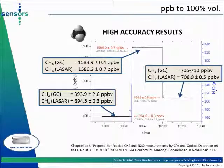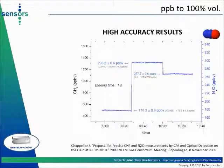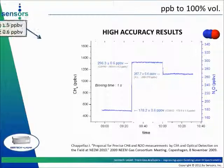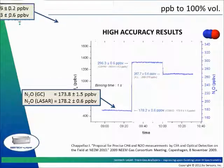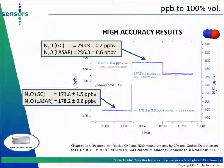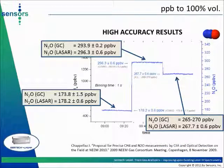For medium levels of methane concentrations, GC measurements ranging from 705 to 710 parts per billion versus 709 parts per billion measured by spectrometry. For nitrous oxide (N2O), Mr. Chapalais reports: for low-level N2O concentrations, about 174 parts per billion by GC versus 178 by spectrometry — a bias error of 4 parts per billion. For high levels, about 294 parts per billion by GC versus 296 — a bias error of 2 parts per billion. For medium levels, GC measurements ranging from 265 to 270 parts per billion versus 268 parts per billion by spectrometry.